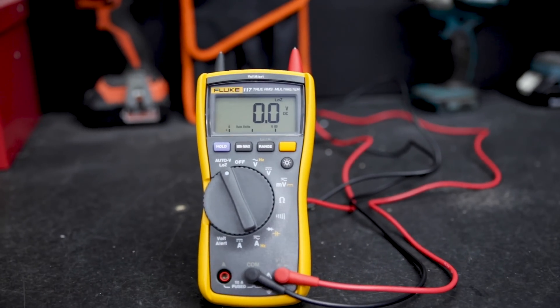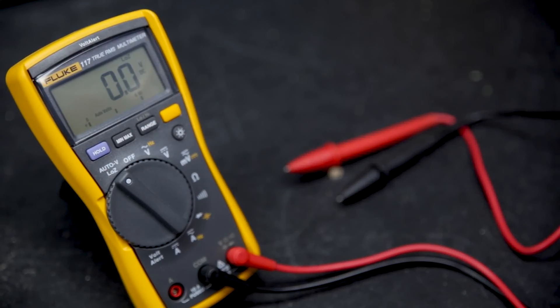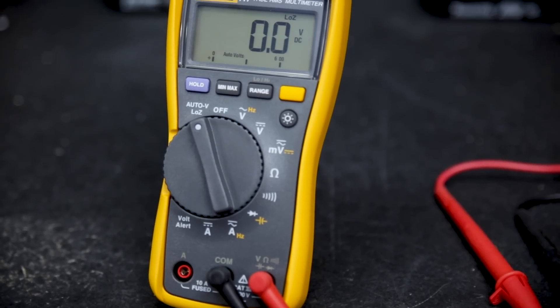This is the Fluke 117. It's a 600 volt digital multimeter. The Fluke 117 is a true RMS meter popular with both the residential and commercial trades and home enthusiasts due to its ease of use and accuracy.